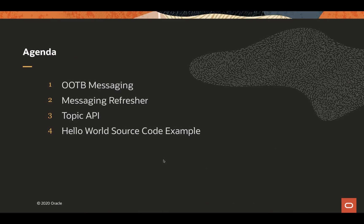In this video, we will highlight the functionality provided by the out-of-the-box messaging functionality added by the Coherence Topics API. We will review publish, subscribe, and message queue processing. We will highlight the Coherence Topic API. And finally, we will interactively look at source code and run a Hello World demo using the Topics API. Note that this video is intended as an introduction — there are more detailed explorations of the topics that we will highlight at the end.